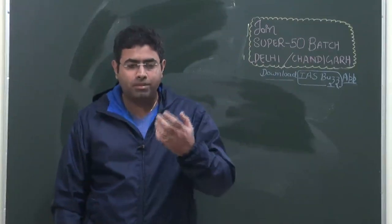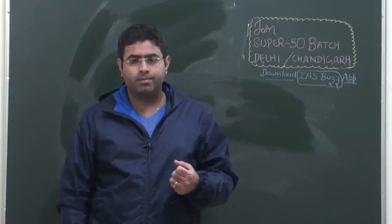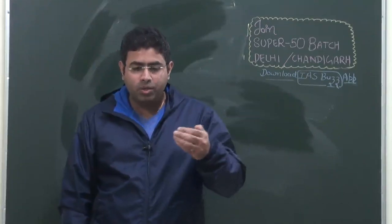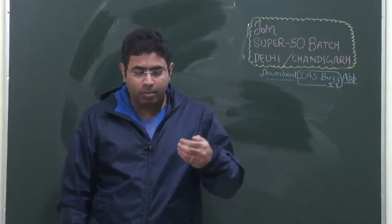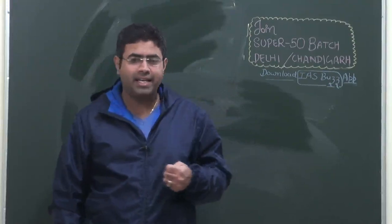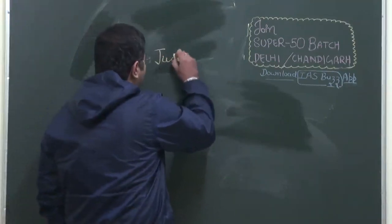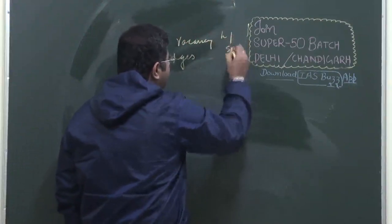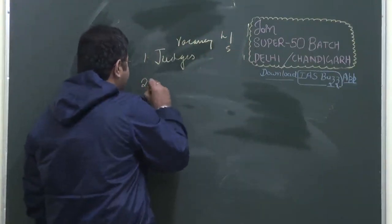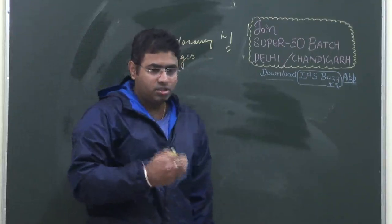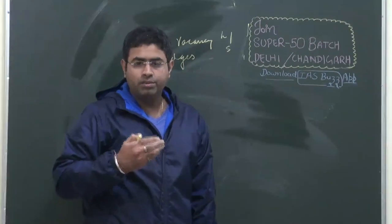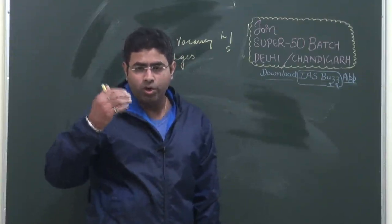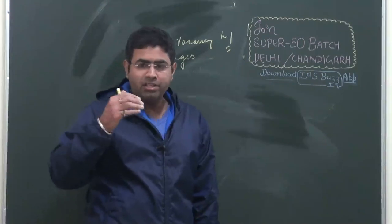The second thing is we need to increase the number of judges. This economic survey highlights a very important thing - in the judiciary, the number of judges is very low. There is a lot of vacancy at the high court level and even at the Supreme Court level. We need to actually fill up these vacancies. It's not only about judges not being there, but also about judges going on holidays or leave.